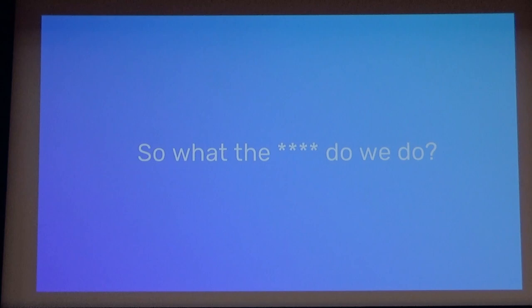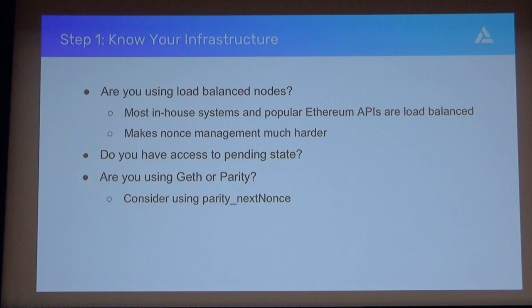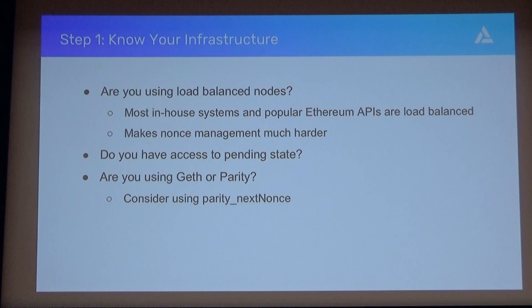So what do we do? How do we actually start to handle this problem? One option is to wait for ETH 2.0—I don't think that's the right solution. A lot of people in this room have applications they're building right now with users, and they need a solution in the short term. So let's start on the road to solving this. Step one is really: know your infrastructure. It doesn't seem like an API call should depend on infrastructure, but it actually does. You should know whether your in-house system is load-balancing nodes, or if the API you're using is doing that.